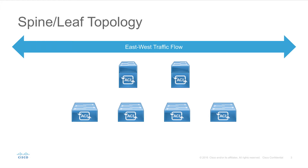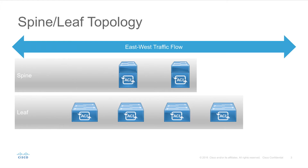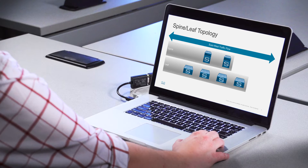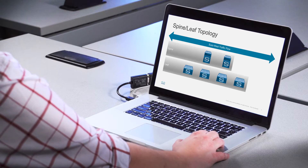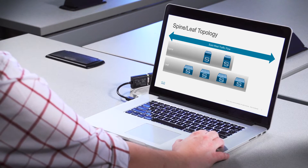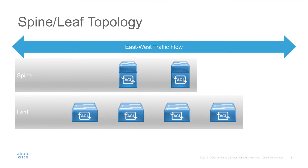This is where the spine-leaf architecture comes in. In this case we have two tiers: the top tier being the spine and the bottom or access tier being the leaf switches. Generally the spines will be Nexus 9500 series switches, although there's at least one exception with a 9300 switch. The leaf switches will be Nexus 9300 series switches. Each leaf will connect to each spine switch, making it a full mesh fabric.